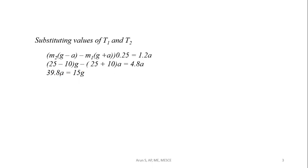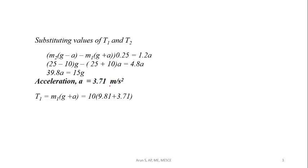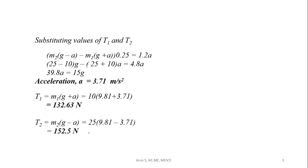Rearranging and substituting g equal to 9.81, we get the acceleration A equal to 3.71 m/s². Substituting A into equation 1: T1 equals M1 times (g plus A), giving T1 equal to 132.63 N. Substituting into equation 2: T2 equals M2 times (g minus A), giving T2 equal to 152.5 N.